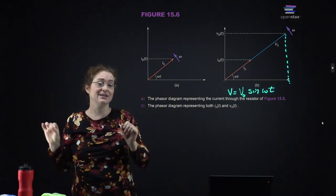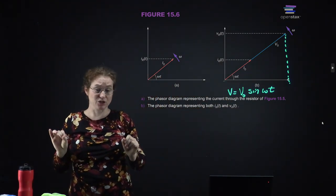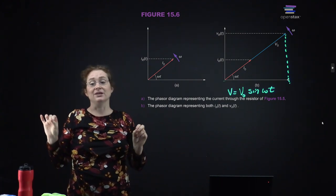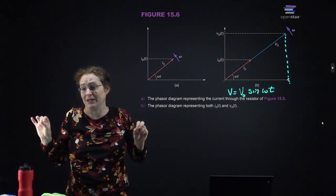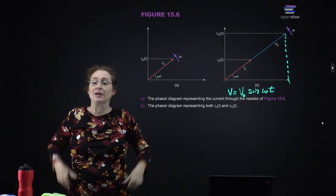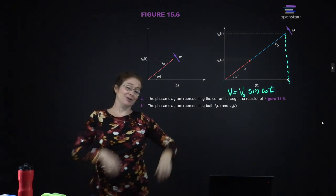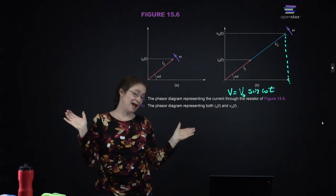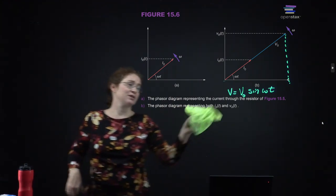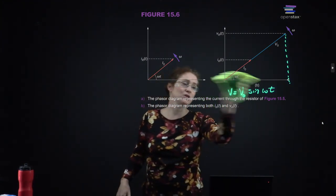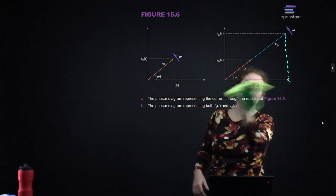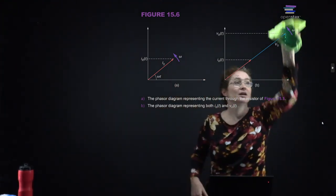I can then describe my voltage as the projection onto the x-axis as my voltage vector rotates. I have a current vector that likewise is rotating, and for a simple resistor that current vector is lined up exactly in phase with the voltage vector. This is not such a useful tool when you're looking at a plain old resistor, but you have to understand how to apply it to a resistor to understand what happens with more complicated circuit elements.